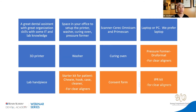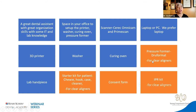We have two SprintRay Pro 95 units, along with the washer and the curing oven. Sprint Ray offers a package where you buy the 3D printer and it comes with the washer and curing oven. If you want to do clear aligners, you also need a pressure former — we have the Drew Format and the Ergo Form — plus a lab handpiece, a patient starter kit, consent forms, and an IPR kit.